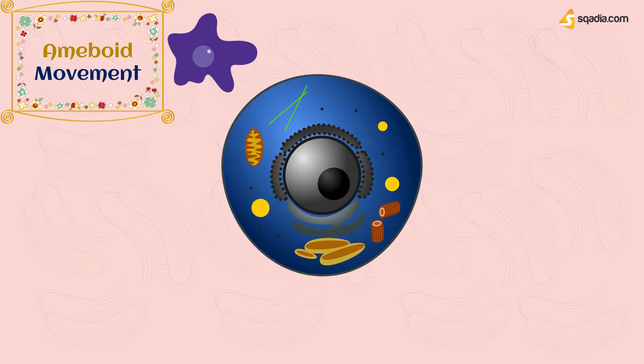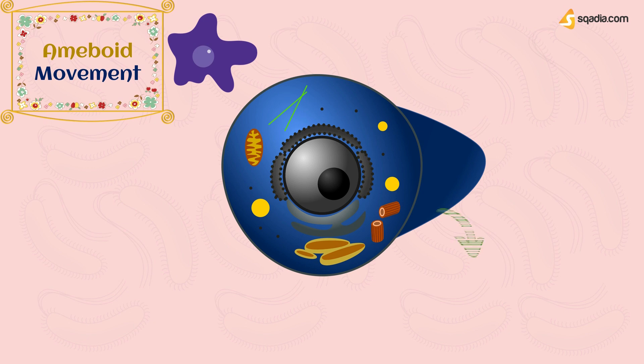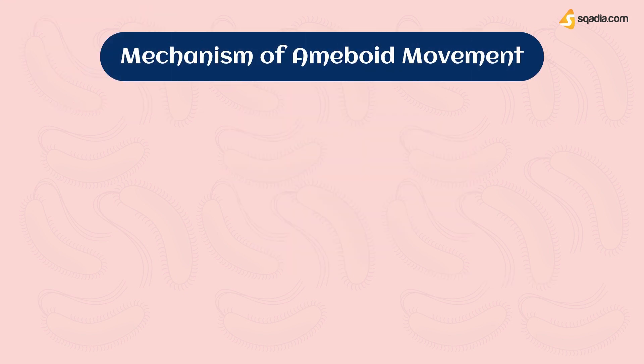The cell generates false feet for its movement so that it can move forward. These false feet are known as pseudopodium. Pseudopodium is a small projection that protrudes outside the cell. This is the first step — pseudopodium is formed in the cell.